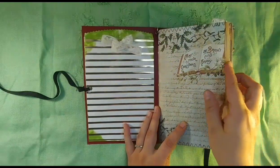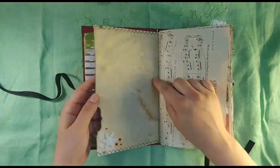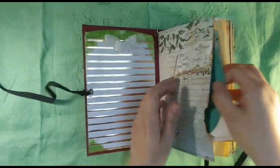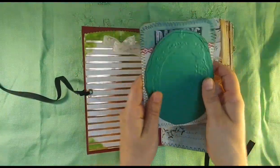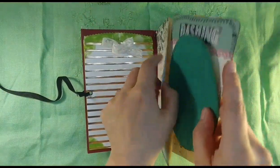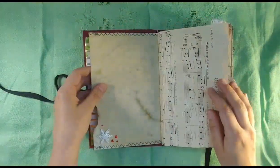I stitched all of her pages onto coffee-dyed paper and turned them into these big pocket pages. I put goodies inside—different tags, journaling cards, photo frames, and things like that.